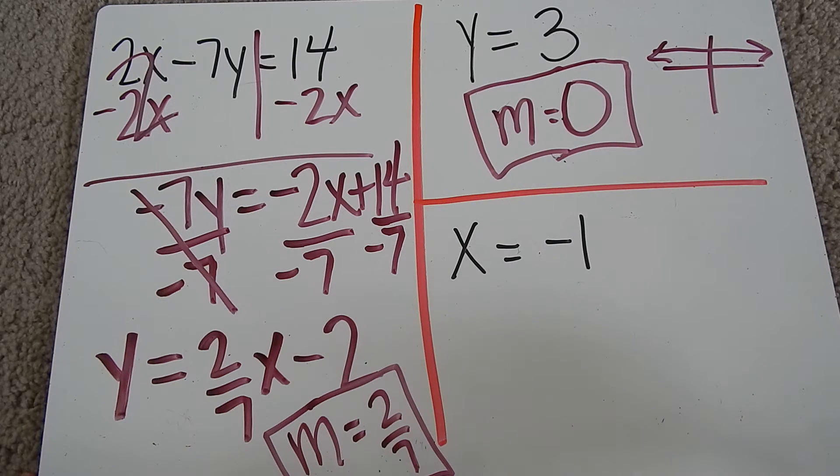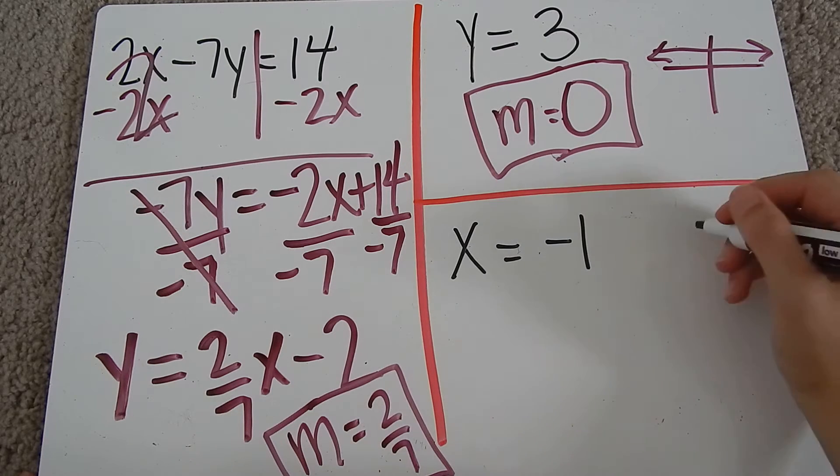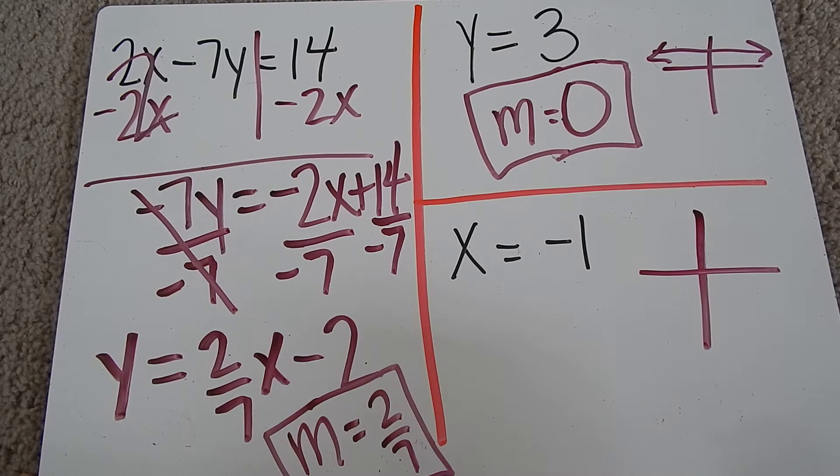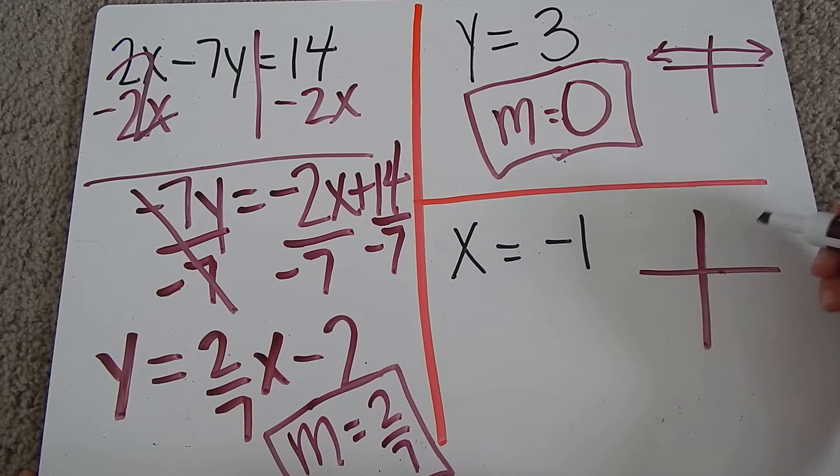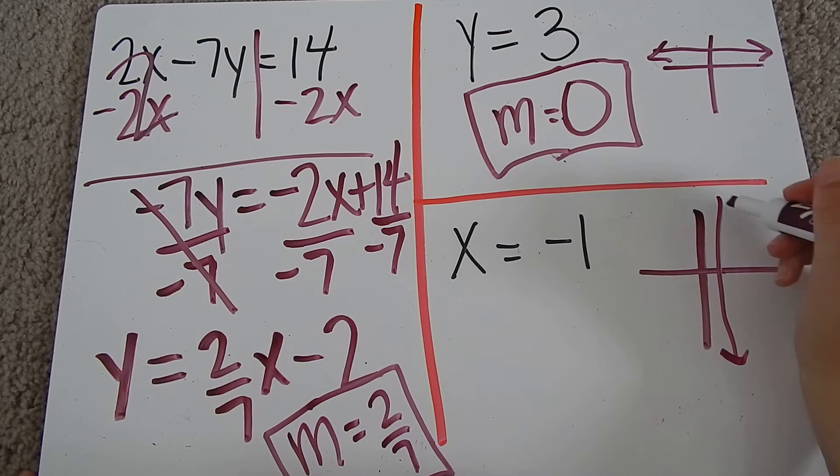Let's do the same thing for x equals negative 1. Here we don't have a y, so it's not going to be 0. But if I draw my axes and graph x equals negative 1, here is my x—negative 1 here—and it's going to be a vertical line.